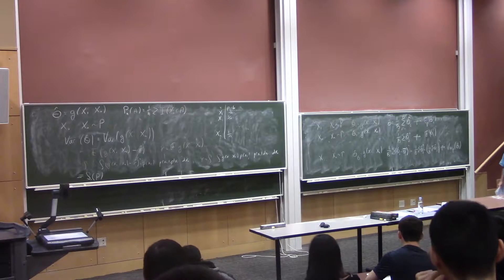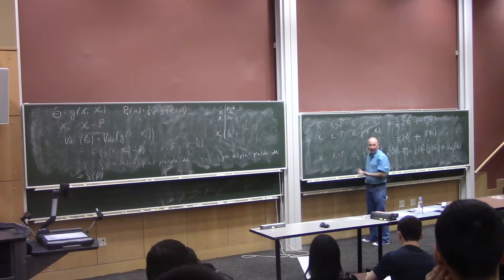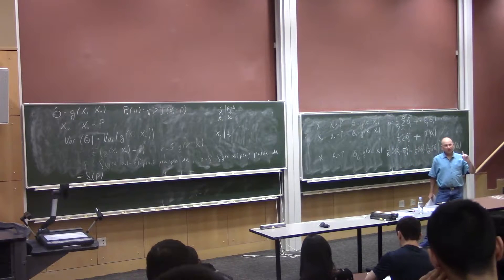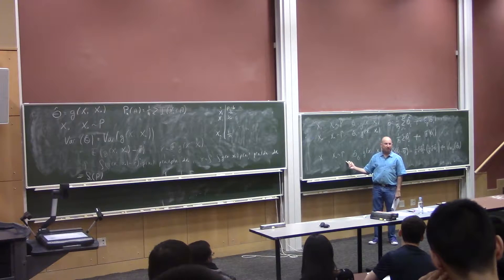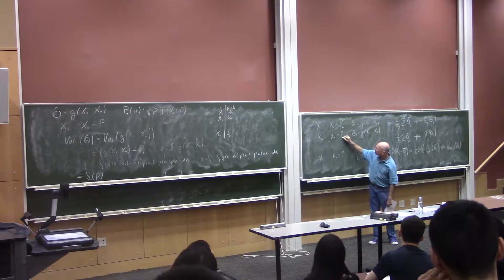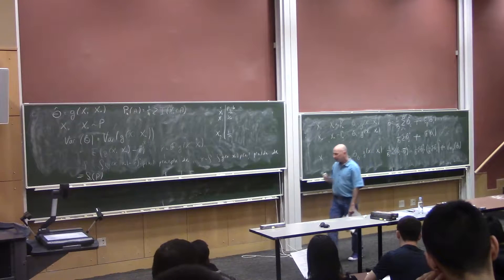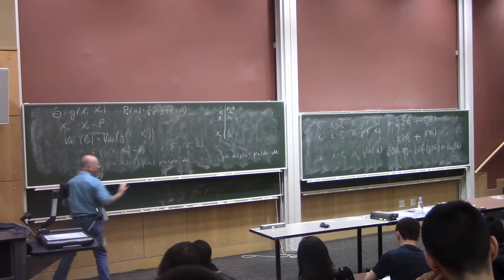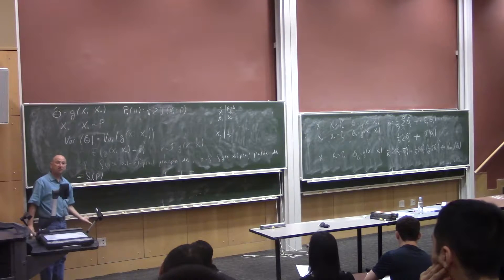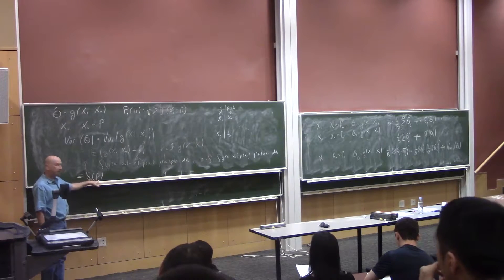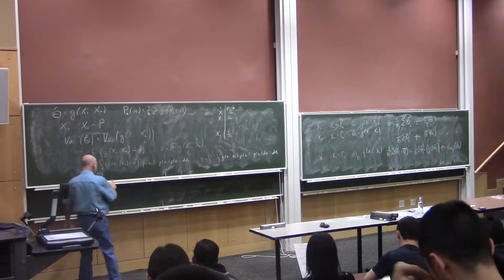Now there's the big question: I can't really do this because I don't know p. The key step was I had to be able to simulate from p. But here's the bootstrap trick: I don't know p, but I have an estimate of p. So why not simulate from my estimate of p — the empirical distribution? That's the bootstrap.